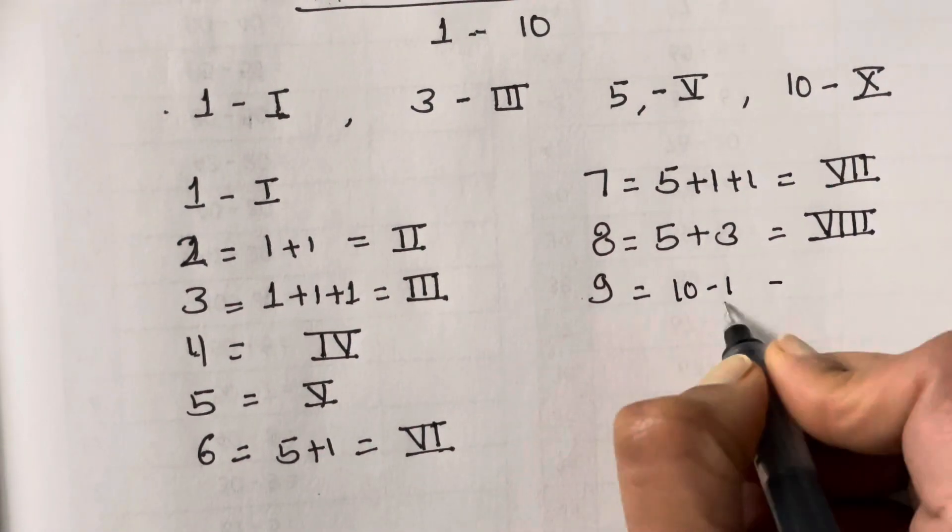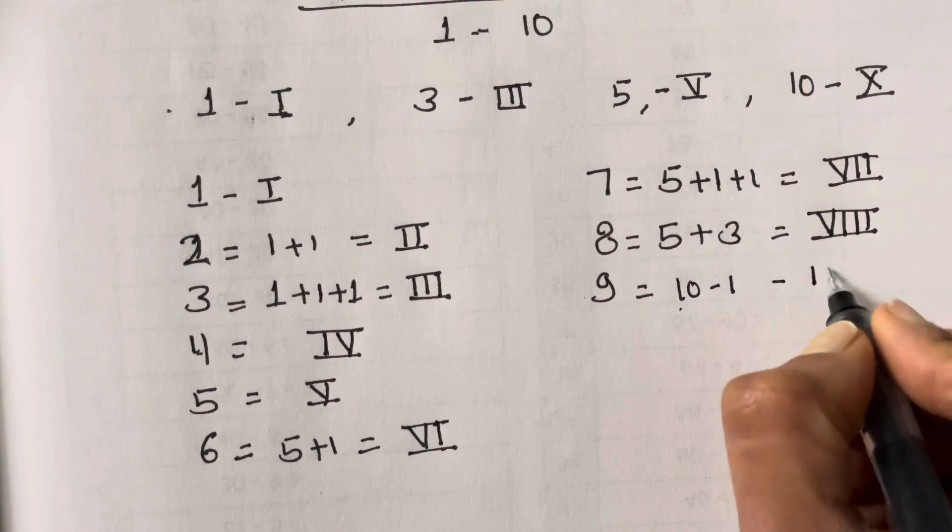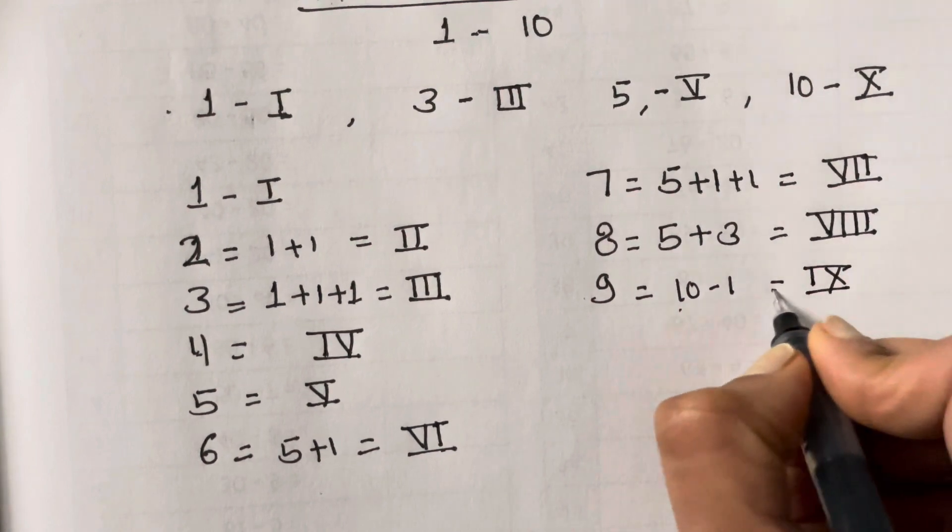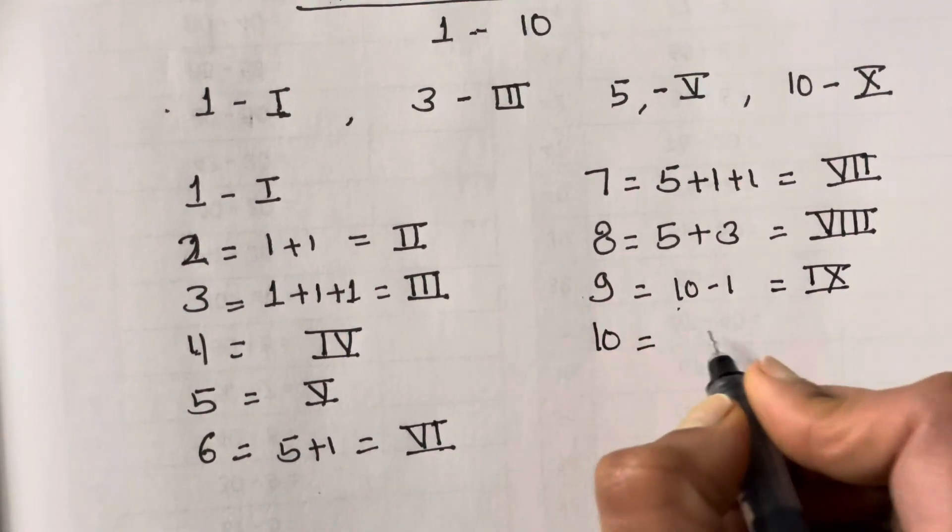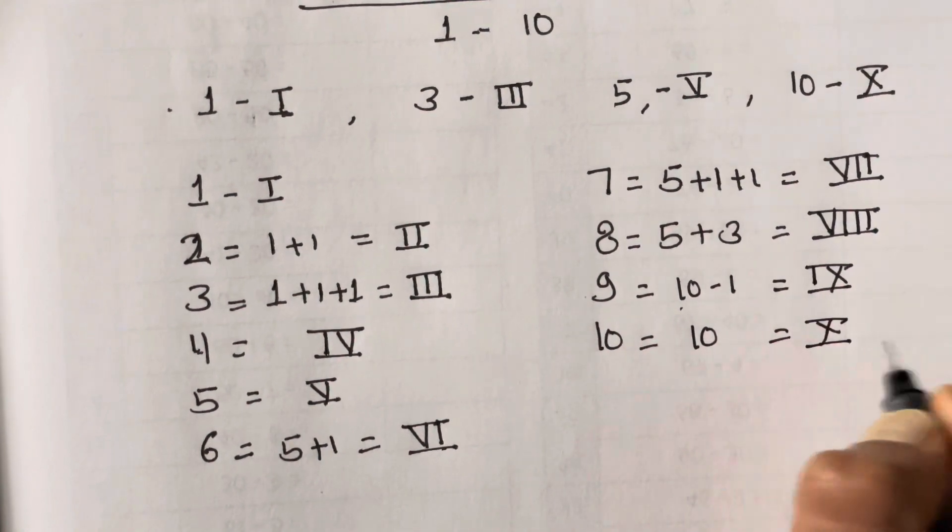So 10 minus 1, the 1 comes before 10, which gives you IX. And then 10 is X.